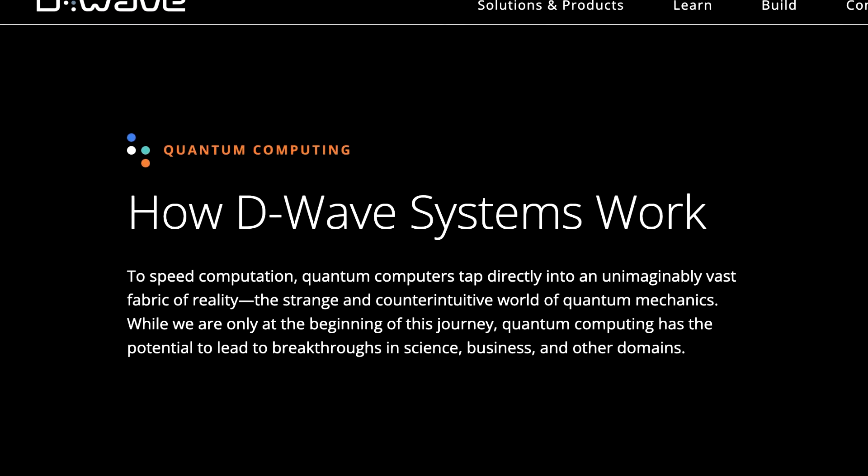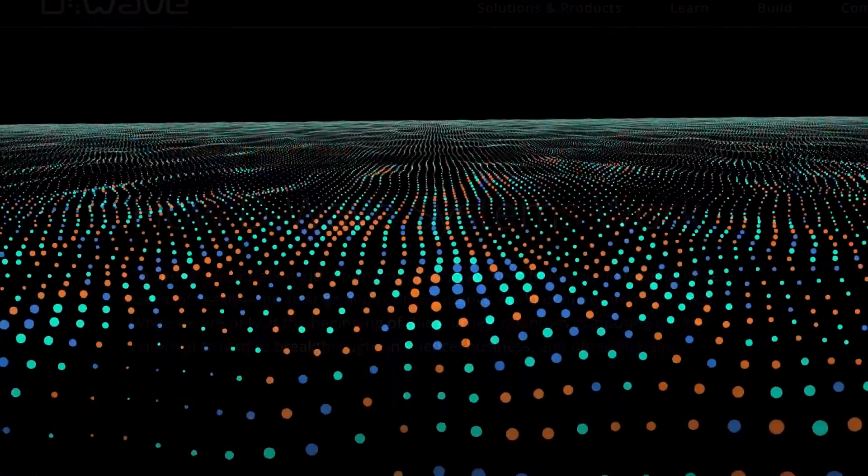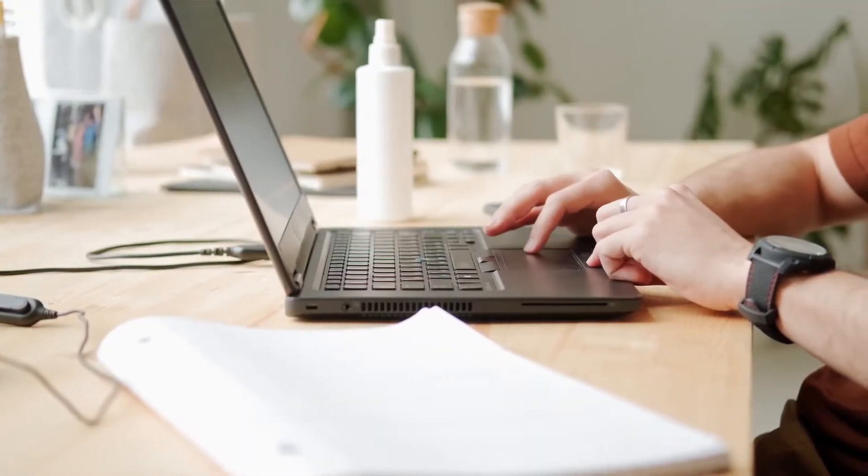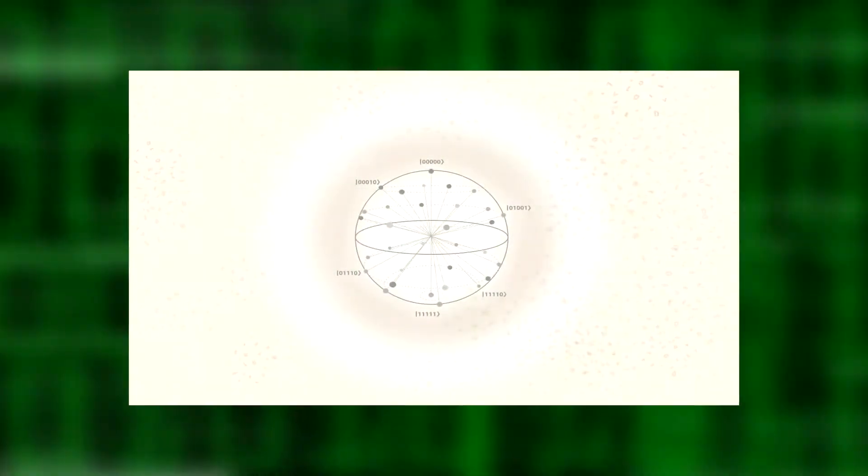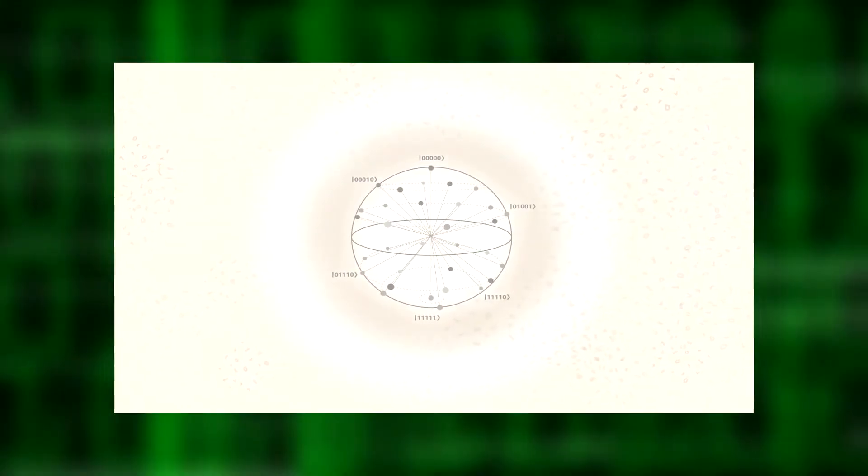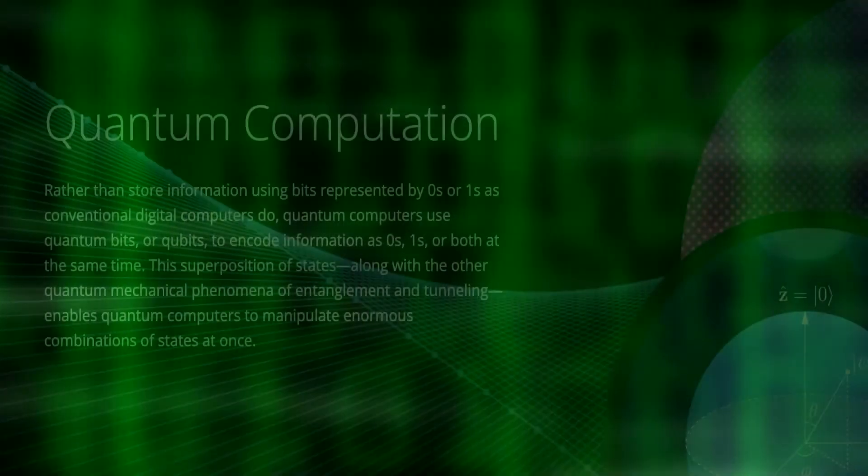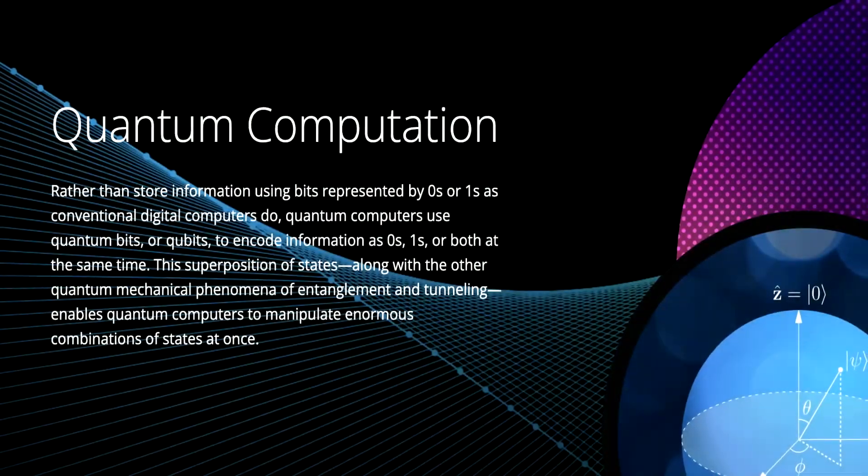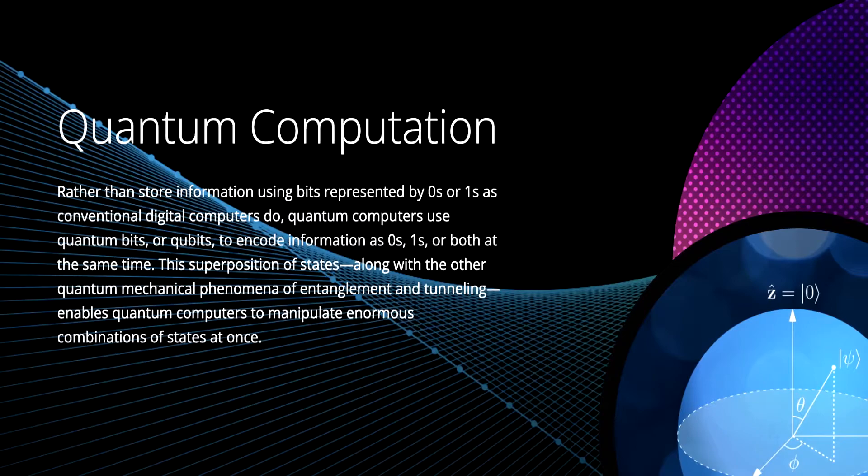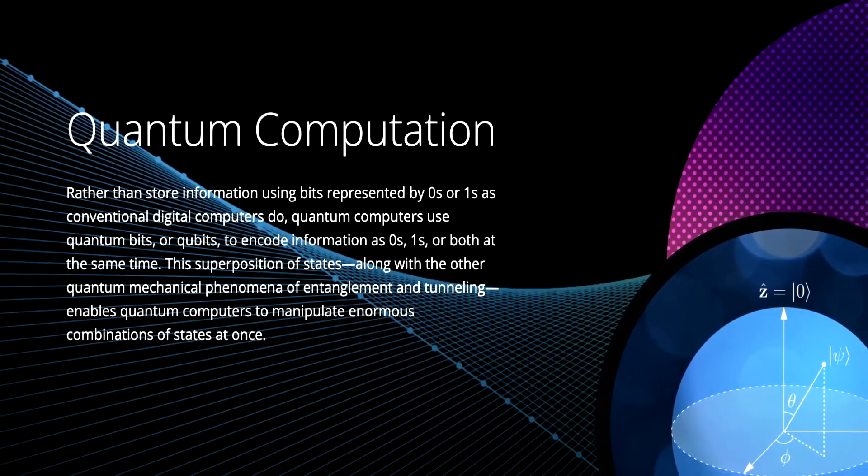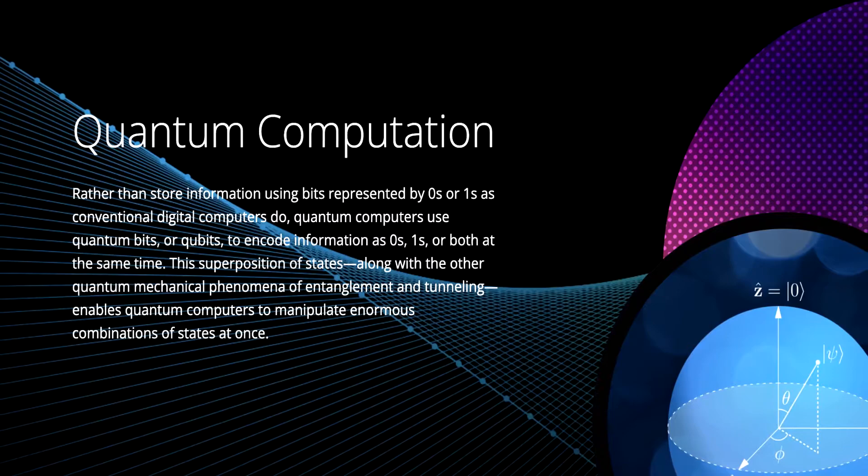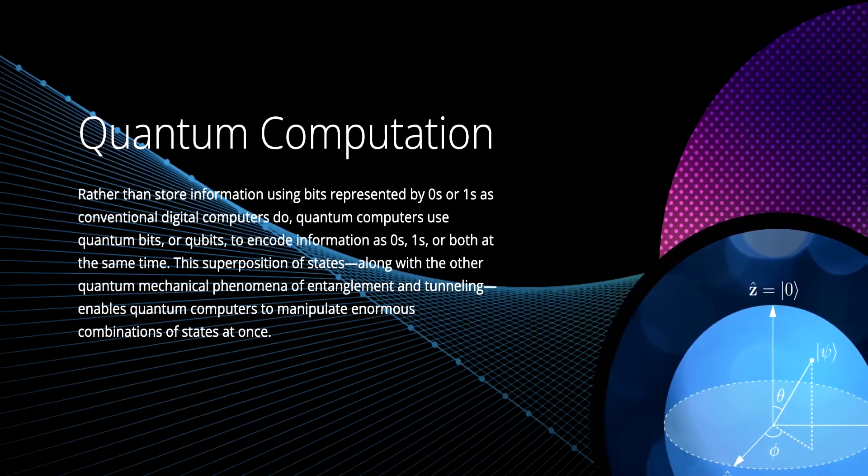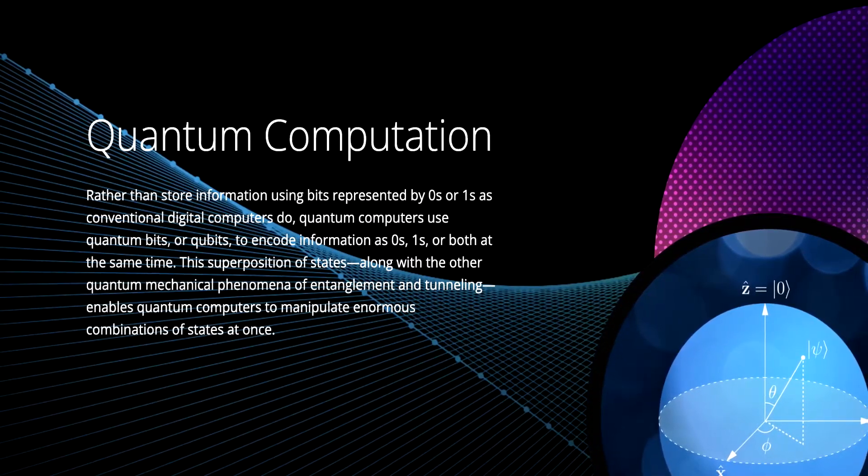These quantum computers work by using something called quantum bits, also known as qubits. Conventional computers analyze and store data using bits represented by ones and zeros. Qubits are able to encode these ones and zeros at the same time by utilizing the quantum superstate. According to their website, this superposition of states, along with the other quantum mechanical phenomena of entanglement and tunneling, enables quantum computers to manipulate enormous combinations of states at once.